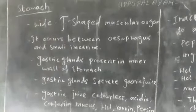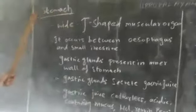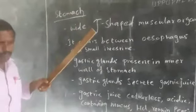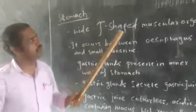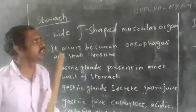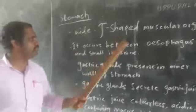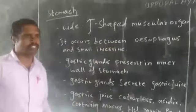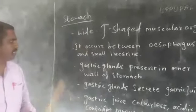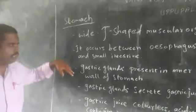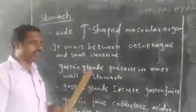My students, we are going to discuss about the topic: the stomach. Stomach is present in our abdominal cavity. It is a wide J-shaped muscular organ. It occurs between the esophagus and the small intestine. Inside the stomach, there are so many gastric glands present in the inner wall of the stomach.